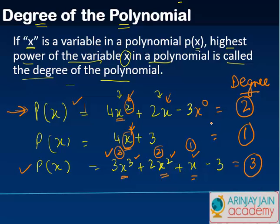So just to summarize, whenever you have a polynomial p(x) where x is the variable, what we see is what is the highest power of x in the given set of polynomial. And whatever is the highest power becomes the degree of the polynomial.